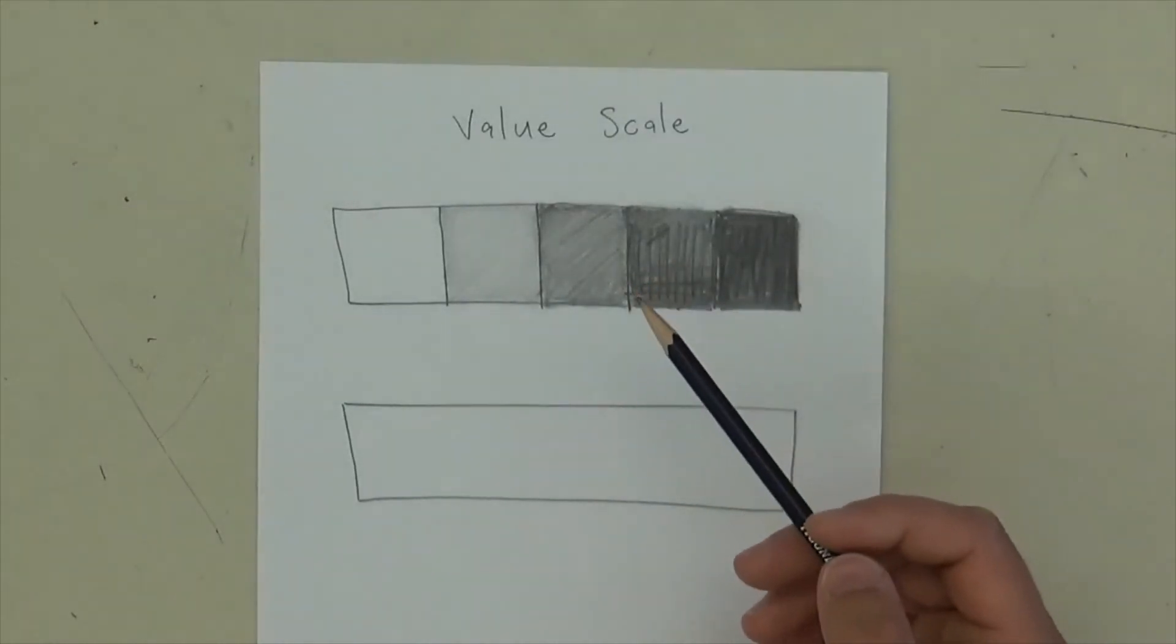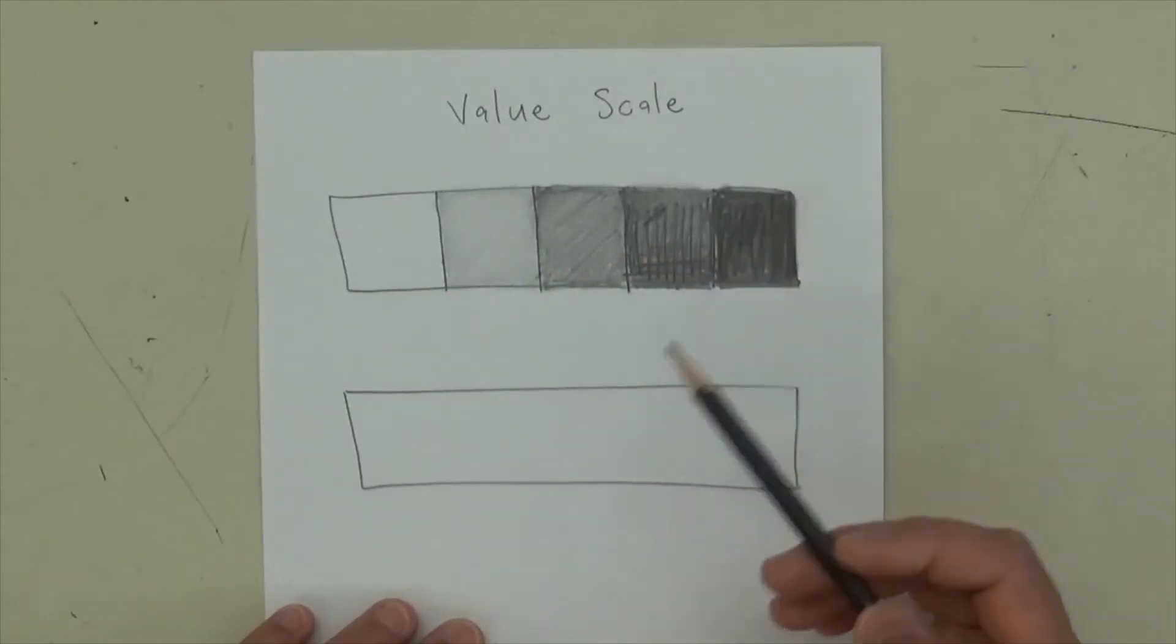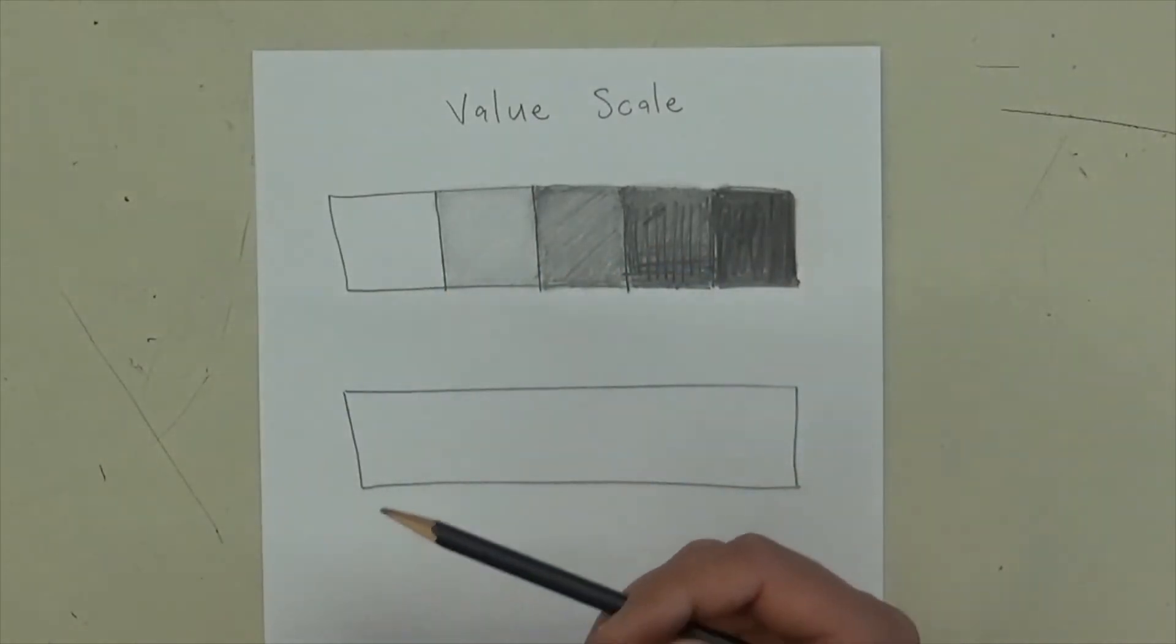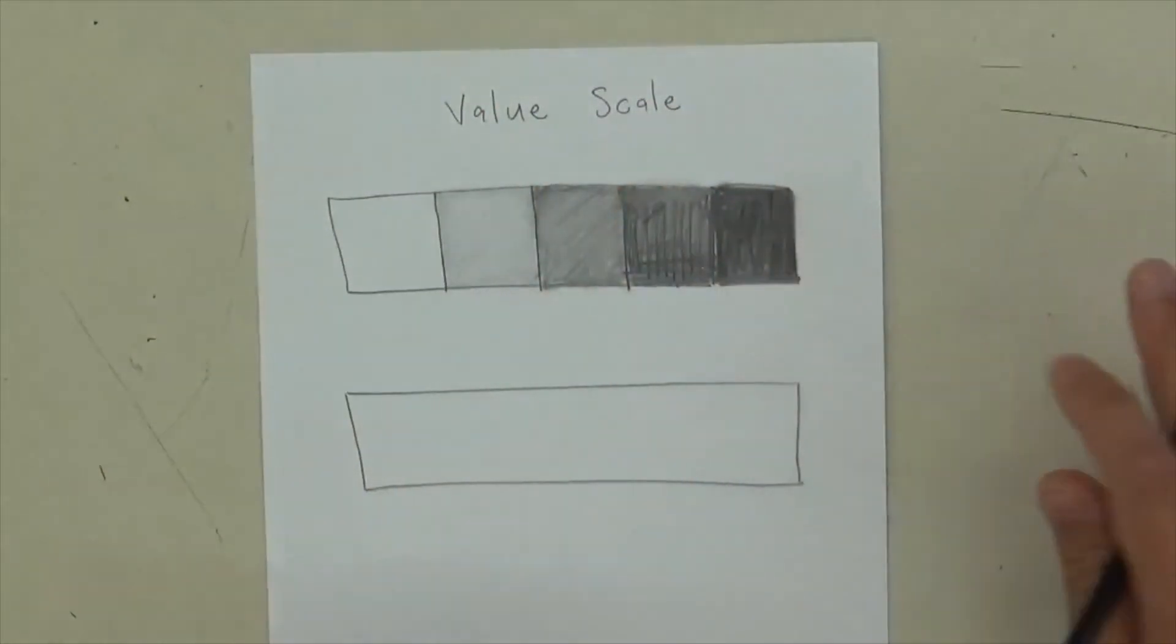But we're also going to do a value scale where we fade it, because each one of these boxes is just solid gray, right? Well, in art, what you can do when you shade is actually go from light to dark, but you can blend it from light to dark.